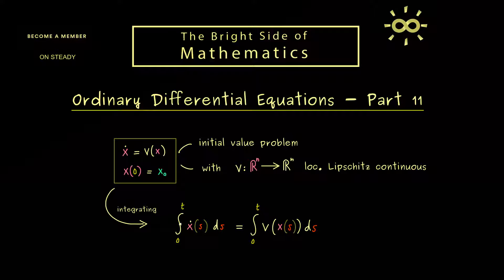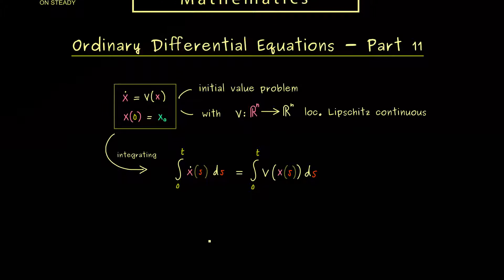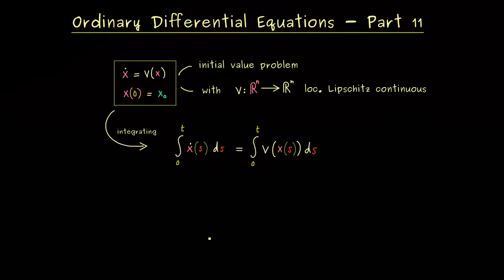And since we have the derivative of x here on the left hand side, we can use the fundamental theorem of calculus. This implies this here is simply x(t) minus x(0). However, x at time 0 is by assumption given as x₀.